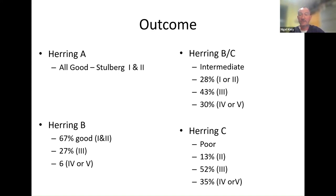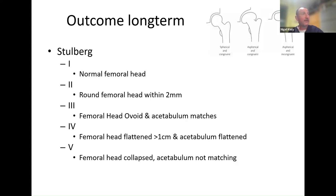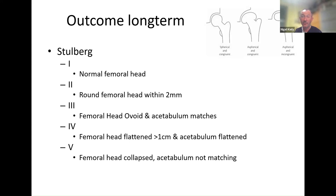Another classification system is the Stulberg classification, which looks at the shape of the hip when you finish growing and gives a prediction about what life will be like in the future. What we're aiming for is a round hip and a round socket — that gives the best chance of a good outcome. Stulberg 1 is a normal-looking hip, 2 is a reasonably round head well matched to the socket, then ovoid shapes that are less good, and the worst outcome is a flattened deformed hip that doesn't match the socket — that's where long-term problems arise. We try to classify early and predict what will happen towards the end of growth, aiming for Stulberg 1 or 2.